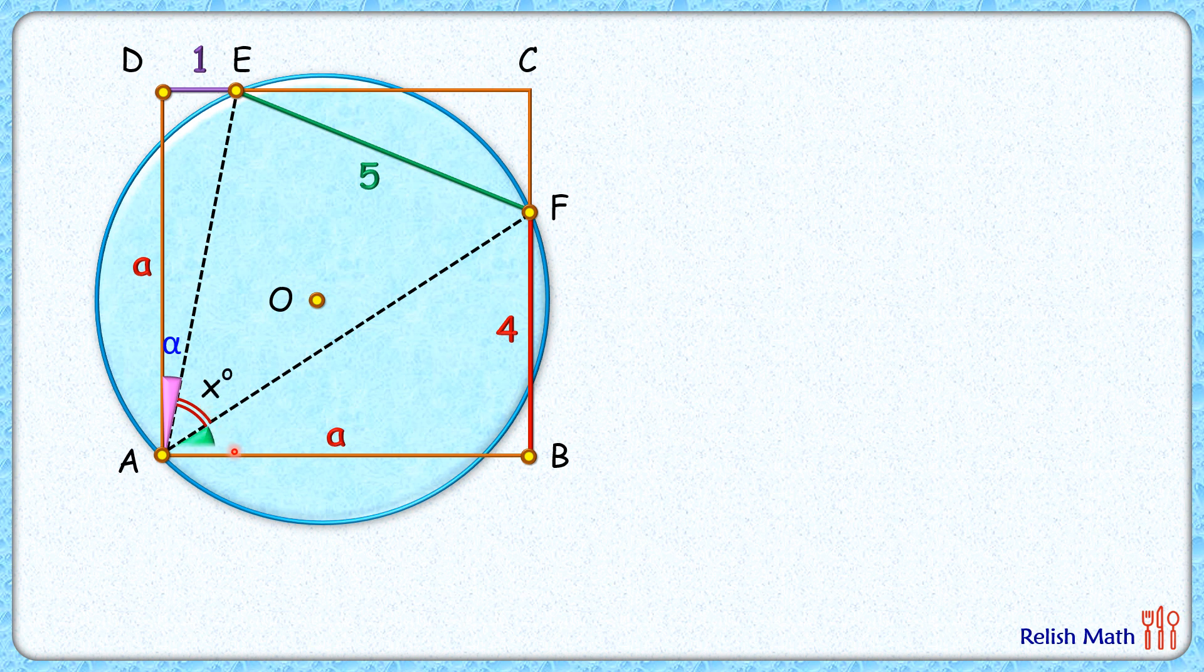...and the remaining angle as beta degrees. So we're getting that alpha + x + beta = 90°. Now we'll solve the question in two steps: first, we'll find the value of x; second, we'll find the radius.